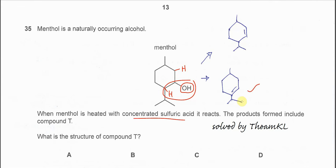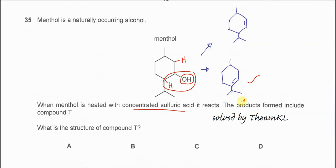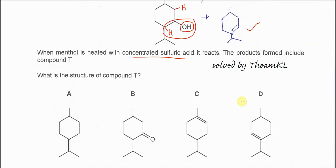So now, which is the compound T? Then we have to look at the answer and compare. So from this answer, we know that is D, because D and this structure is actually the same structure.